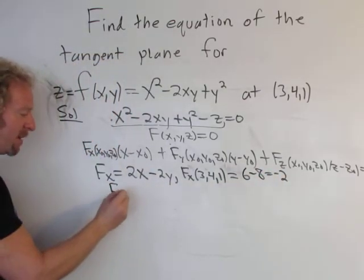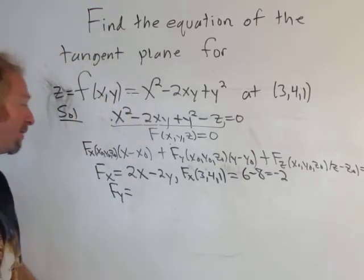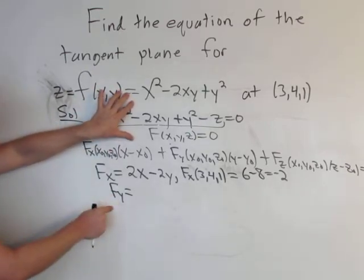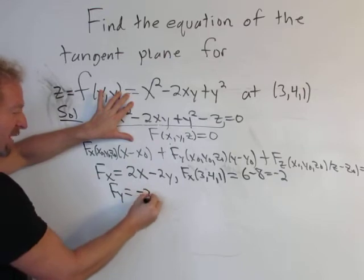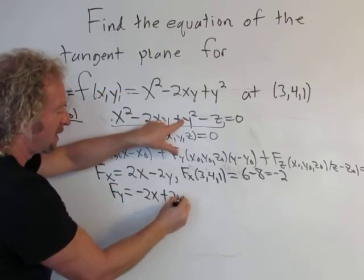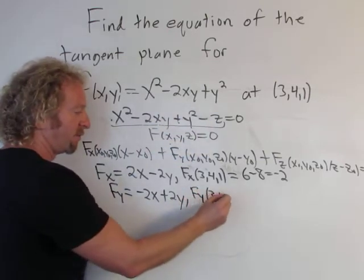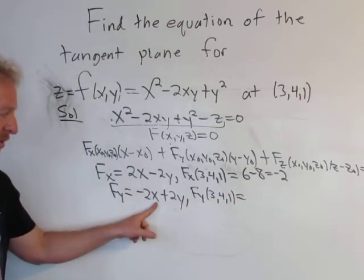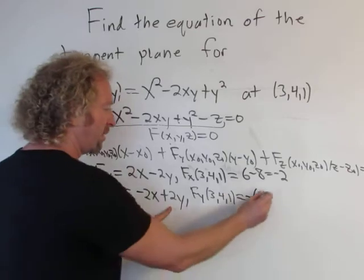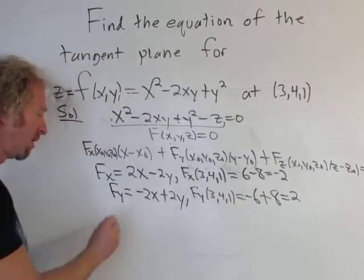For the partial with respect to y, we treat x and z as constants. The x² term gives zero, the -2xy term gives -2x, and the y² term gives 2y. So F_y = -2x + 2y. Plugging in (3,4,1): negative 2 times 3 is -6, plus 2 times 4 is 8, giving us 2.